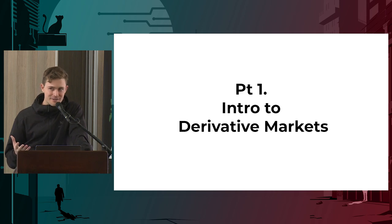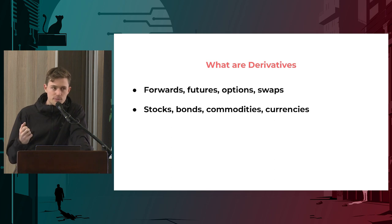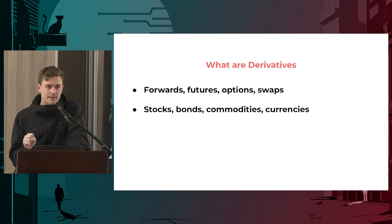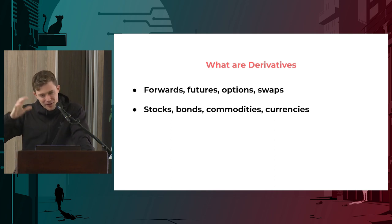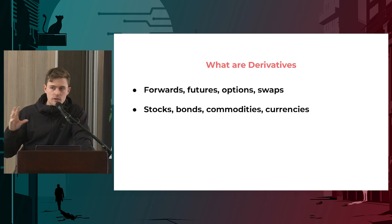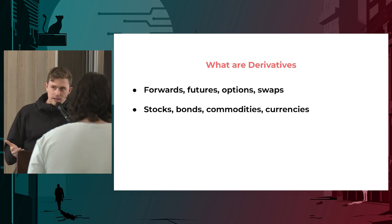So, derivatives. Derivatives derive their value from some underlying asset. For example, if you want exposure to the price of crude oil, you're not going to buy barrels of the stuff and store it in your garage - it's just not practical. Instead, we have a representation of that asset, a derivative concept that represents that value. We've got different types of markets to trade these things: futures, forwards, options, and so forth. Common underlying assets are stocks, commodities, and currencies.